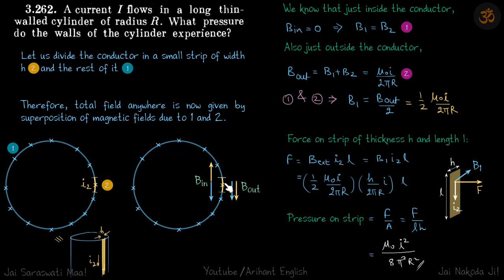Why just outside? Because only just outside the field, because of the rest of the conductor, will be the same. If you go too much inside and too much outside by the same distance, then the value of field due to the conductor will be different. Here, just near this strip, the field will be the same because of the conductor.